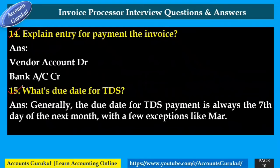What is the due date for TDS payment? Generally, the due date for TDS payment is the 7th day of the next month, with a few exceptions. For March, TDS is due by 30th April or 31st May, and for all other months it is the 7th of the following month.